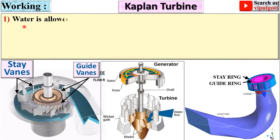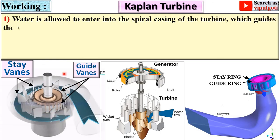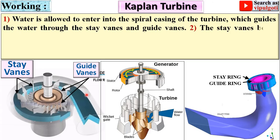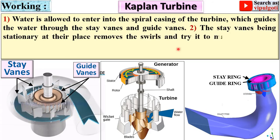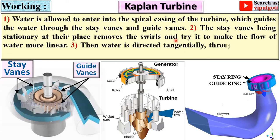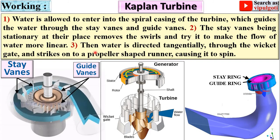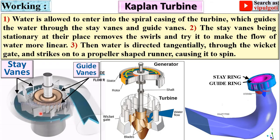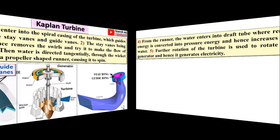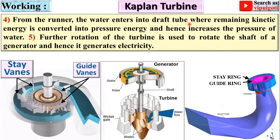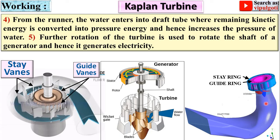Working of the Kaplan turbine: Water enters the spiral casing, which guides it through the stay vanes and guide vanes. The stay vanes, being stationary, remove the swirl and make the flow more linear. Water is then directed tangentially through the wicket gates and strikes the propeller-shaped runner, causing it to spin. From the runner, water enters the draft tube where remaining kinetic energy is converted into pressure energy. Rotation of the turbine shaft drives a generator, producing electricity.